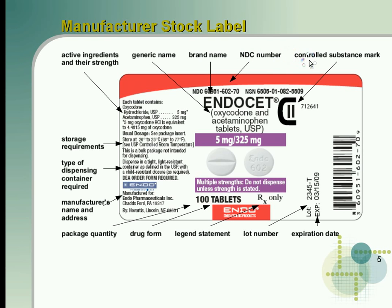The controlled substance mark is present since this happens to be a C2. Coming down, we can see our expiration date, our lot number, and our legend statement telling us that this is prescription only. The drug form is tablets, the package quantity is 100, and the manufacturer's name and address — Endo Pharmaceuticals, located in Pennsylvania. It also shows the type of dispensing container required: dispense in a tight, light-resistant container as defined in the USP with a child-resistant closure as required. For storage requirements, store at 20 to 25 degrees Celsius, which is 68 to 77 degrees Fahrenheit — see USP controlled room temperature.